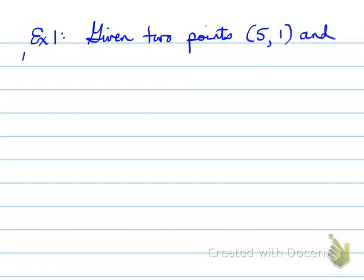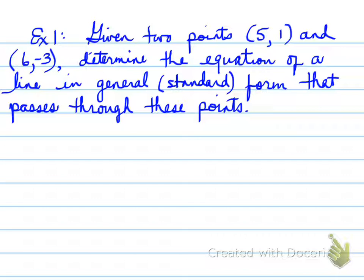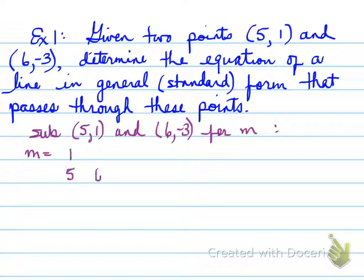Example 1. Given two points, 5, 1, and 6, negative 3, determine the equation of a line in general standard form that passes through these points. So, we need to find the equation of the line. So, we need the slope. So, we're going to sub the points into m. And we plug it in. And we find out the value of m. So, again, one more time. You see the 5, 1 here. We write 5, 1. 6, negative 3. We write 6, negative 3. They're always lined up as the coordinates. We subtract those values and you get 4 on top, negative 1 on the bottom, which simplifies to negative 4. So, that's the slope of the line that crosses those two points.